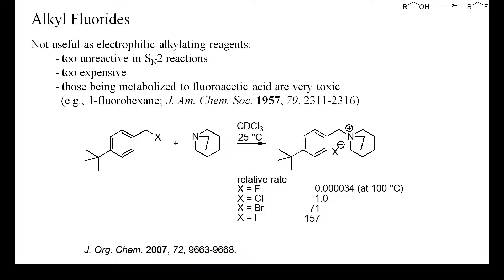One group of toxic organofluorine compounds are fluoroacetic acid and any compound that will be metabolized to fluoroacetic acid — for instance, primary linear alkyl fluorides with an even number of carbon atoms. Fluoroacetic acid is metabolized into an inhibitor of the enzyme aconitase, which is critical for the citric acid cycle. There are several other chemically stable but highly toxic organofluorine compounds, and new fluorinated compounds should be treated with great care, in particular if they are volatile.